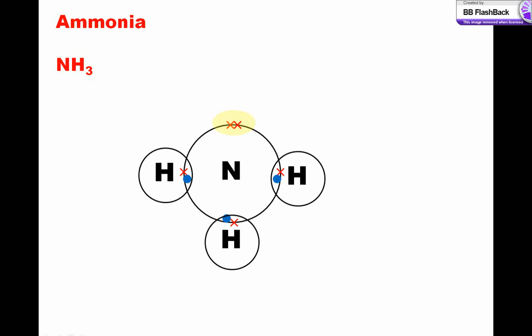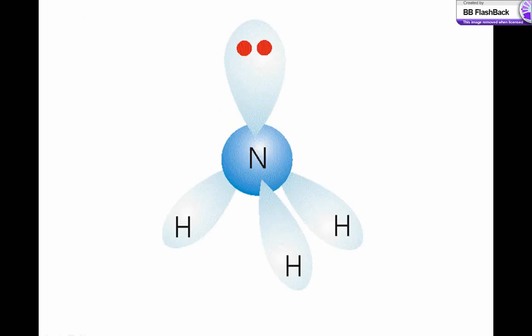The non-bonding electrons do however influence the shape of the molecule, since these repel the bonding electrons. As a result, the bonding and non-bonding electrons arrange themselves like this.